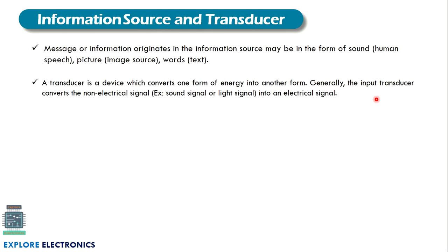The information source can be a message in the form of sound, a picture, or words in text. We use an input transducer to convert that information into an electrical quantity — converting a non-electrical signal into an electrical signal. For example, a sound signal is converted into an electrical signal.